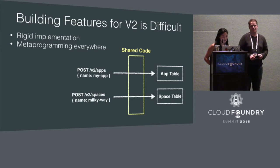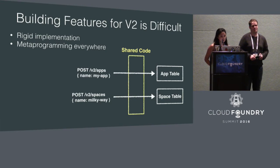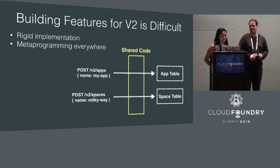For instance, if we make a POST request to V2 apps, we hit the same code as we'd hit if we were making a POST request to V2 spaces. So if we were to try to change the code for how apps behave, we could make an undesirable change in how spaces behave. This previously existing implementation made new feature work very slow, so we needed to redefine some of the constructs to provide flexibility and future-proofing.